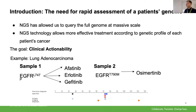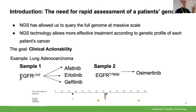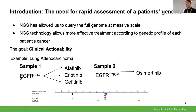For example, in a case of lung adenocarcinoma where there have been serial biopsies with tumor profiling, each of these biopsies can be used to inform treatment. In the first sample, there is a host of FDA-approved treatments available to the physician. And in the second biopsy, a resistance mutation is observed — and again, based on this genetic profile, there are options available to the physician.